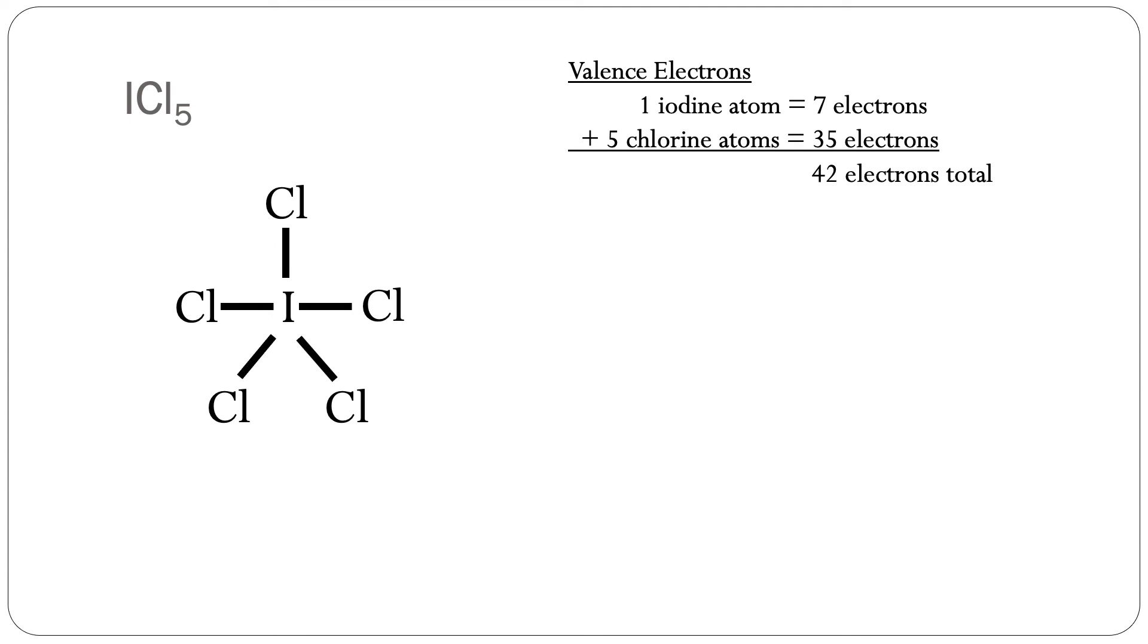We'll show the connections representing the covalent bonds. There are five bonds equaling 10 electrons in bonding. There are 32 electrons remaining. We'll satisfy the octet rule for each chlorine atom by adding six electrons to each atom.